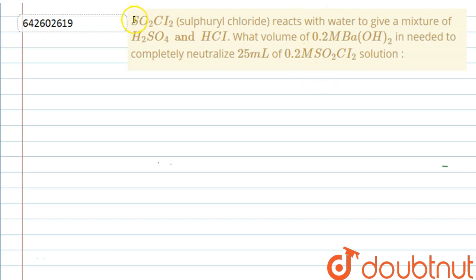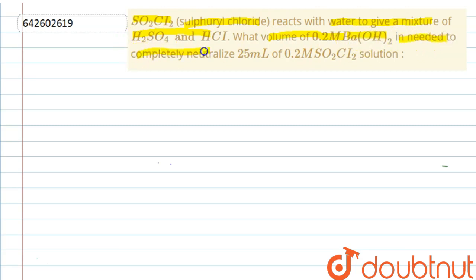The question states: SO₂Cl₂ (sulfuryl chloride) reacts with water to give a mixture of H₂SO₄ and HCl. We have to find the volume of 0.2 molar barium hydroxide solution needed to completely neutralize 25 mL of 0.2 molar SO₂Cl₂ solution.